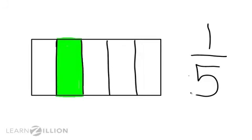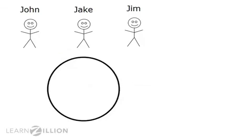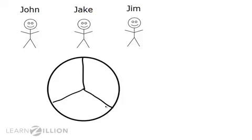Now, let's look at this in a problem. Here is a cake. Three friends — John, Jake, and Jim — are sharing this cake equally. What fraction of the cake does John get? Well, if the cake needs to be shared equally between three friends, I would have to divide or split the cake into three equal parts. I know that when I split something into three equal pieces, each piece is called a third. Then I would shade in only one piece, because John only gets one piece, so that it's fair. Now, I need to write the fraction one-third.